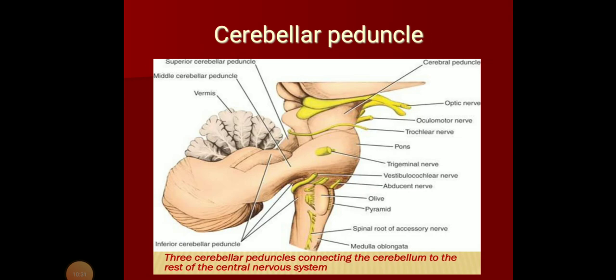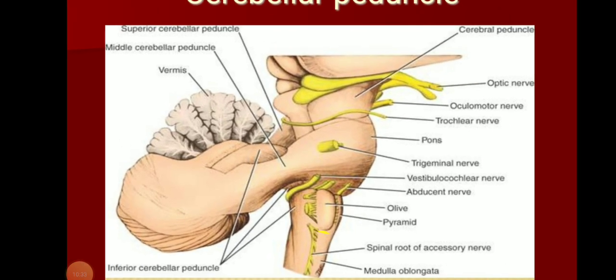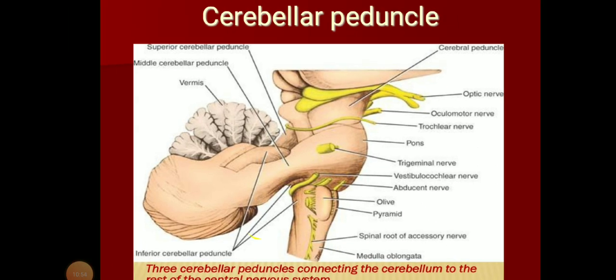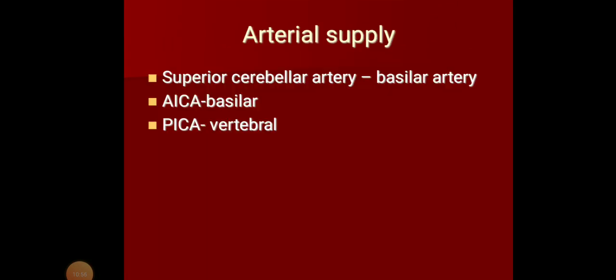Look at that figure. You can see the three peduncles marked there. The superior cerebellar peduncle connects the cerebellum to the midbrain. The prominent middle cerebellar peduncle connects the cerebellum to the pons. The inferior cerebellar peduncle connects the cerebellum with the medulla. With that we finish the cerebellar peduncles.